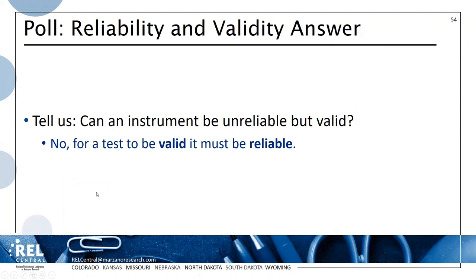The answer is no — for a test to be valid, it must be reliable. Validity means you're measuring what you think you're measuring, and your conclusions can be supported. If a test is unreliable — generating different results when used, with items not consistent with each other — you do not know exactly what you're measuring. It might be intended to measure teacher content knowledge, but if the test is unreliable, it's also picking up something else. Generally speaking, a test must be reliable as a requirement for validity.